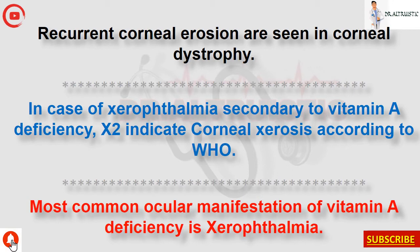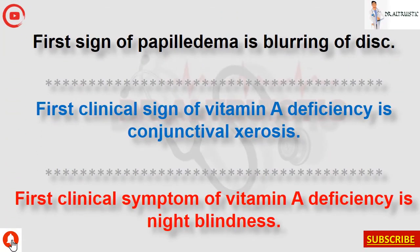Most common ocular manifestation of vitamin A deficiency is xerophthalmia. First sign of papilledema is blurring of the disc margins. First clinical sign of vitamin A deficiency is conjunctival xerosis. First clinical symptom of vitamin A deficiency is night blindness.